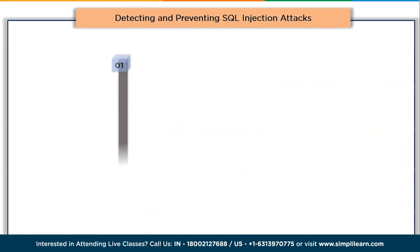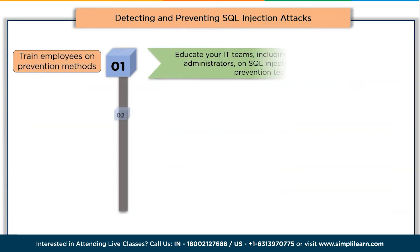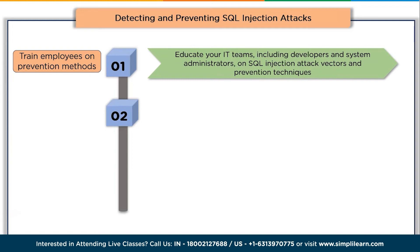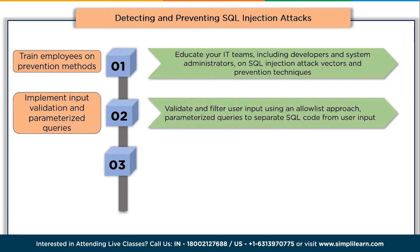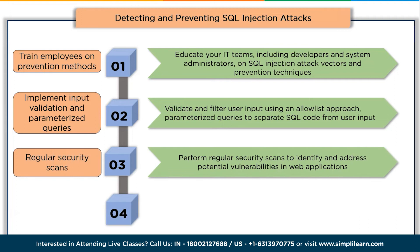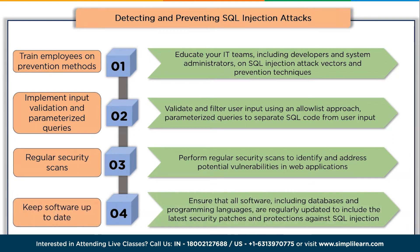Detecting and preventing SQL injection attacks is crucial to safeguarding web applications. First, train employees — educate IT teams including developers and system administrators on SQL injection attack vectors and prevention techniques. Second, implement input validation and parameterized queries: validate and filter user input using an allow-list approach, and use parameterized queries or prepared statements to separate SQL code from user input. Third, perform regular security scans to identify and address potential vulnerabilities. Fourth, keep all software including databases and programming languages up to date with the latest security patches.